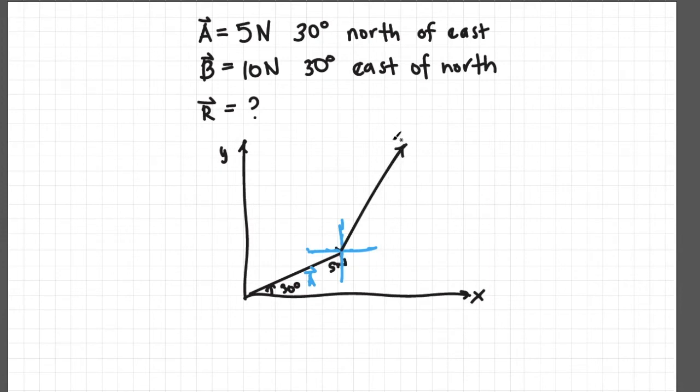This is 10 Newtons. This 30 degrees east of north is equivalent to obviously 60 degrees north of east.